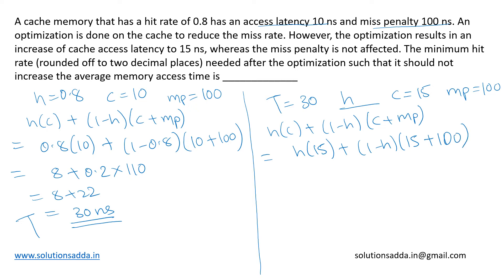So we get 15h plus 115 minus 115h, and this should be equal to t, which is 30 nanoseconds. Evaluating this, we get 15h minus 115h equal to 30 minus 115. So from here we get h equal to 85 upon 100, equal to 0.85.